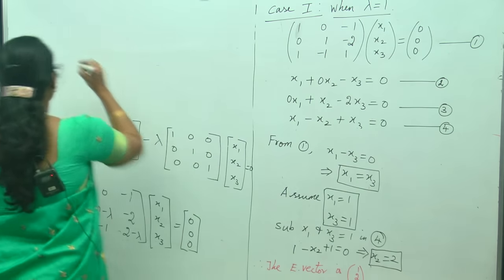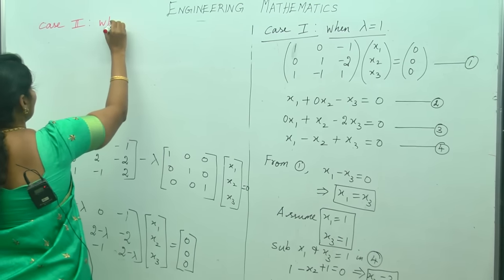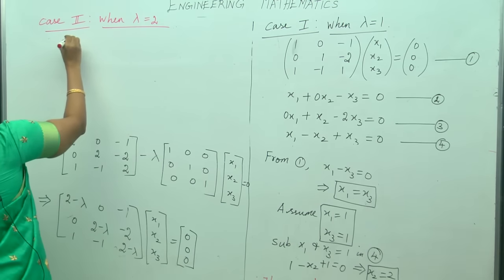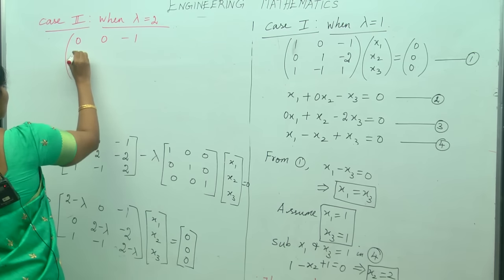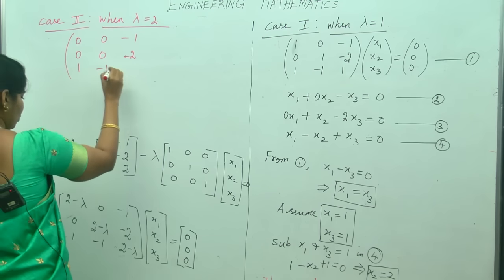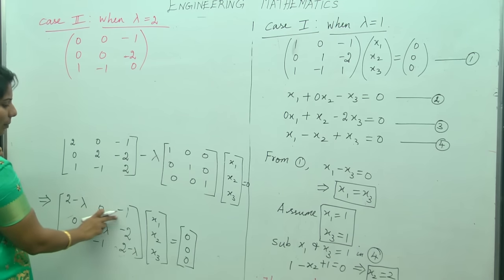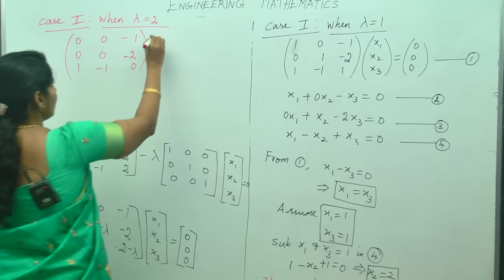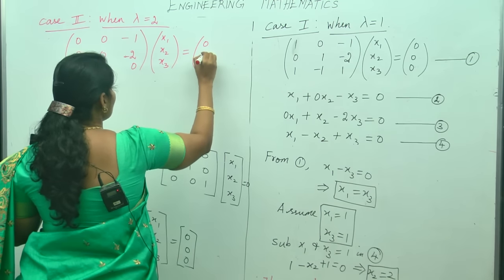Similarly, for Case 2 when lambda equals 2, the matrix A minus lambda I becomes [0, 0, −1 / 0, 0, −2 / 1, −1, 0]. Substituting the lambda value gives this reduced matrix, and we set it times [x1, x2, x3] equal to [0, 0, 0].